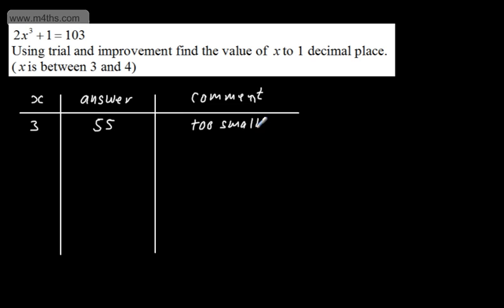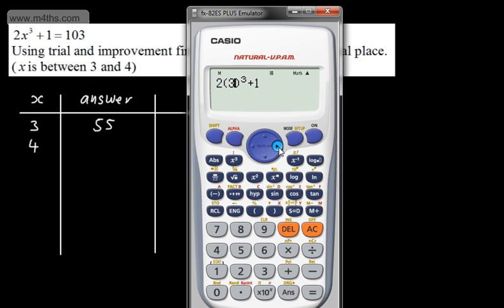Our comment now is that that is too small. We want to be shooting now for 103. So let's go ahead and put 4 in. If we put 4 in, all we're going to do is swap over. So we've started now with these two endpoints. That's going to be 129.